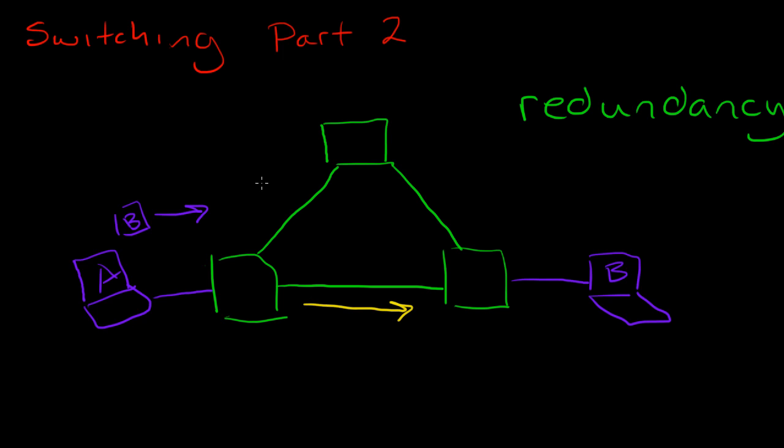So it's going to go this way, and it's going to go this way. Of course, in this case, this switch also doesn't know where B is, so he's going to broadcast it as well.